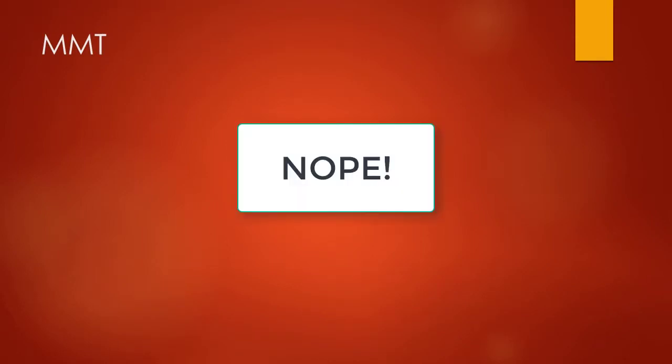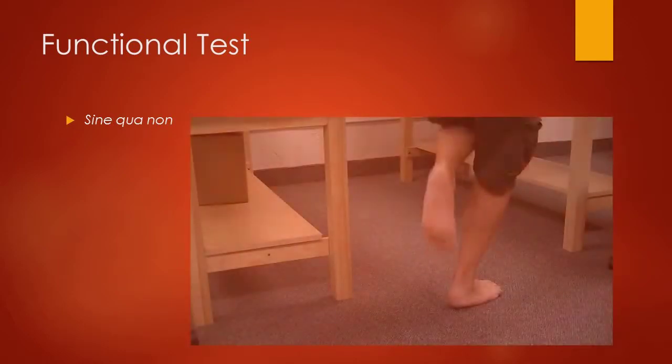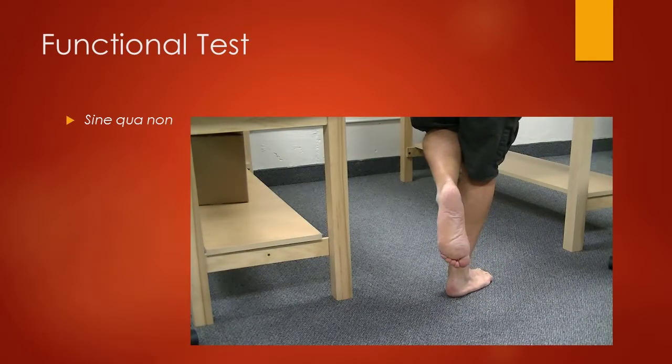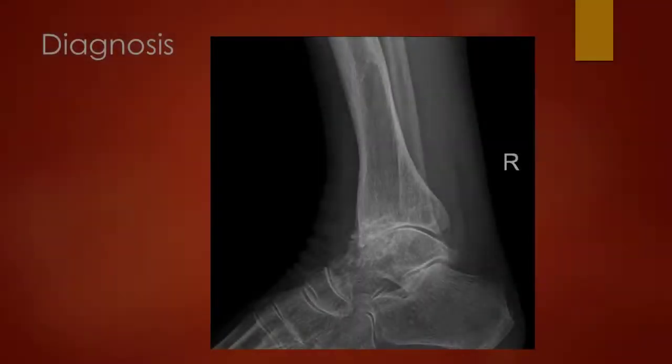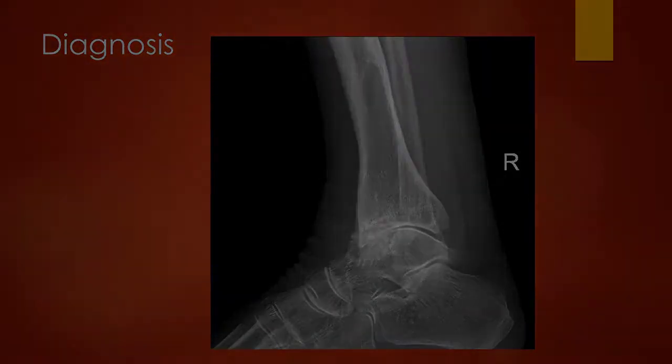Depending on the severity of the ankle sprain, we are unable to do manual muscle testing, although it can be done more so for a first-degree sprain. For functional testing, we have a sine qua non — essentially an essential action — where having the person perform a one-legged hop will help demonstrate the severity of the ankle sprain. Diagnosis is usually going to be clinical, although an x-ray can be performed to check for fractures as well.